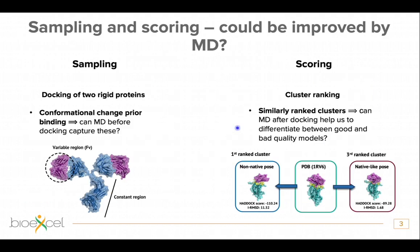Now that we know more about sampling and scoring, I would like to show you how we can incorporate MD in both of these stages. As I said, you start with rigid proteins, but proteins are not rigid in nature, and sometimes you would need a higher conformational change before binding — a rearrangement of proteins or residues — sometimes larger than what even the flexible phases of HADDOCK can take care of. This is the first part of my talk: using MD before docking, on an antibody use case.